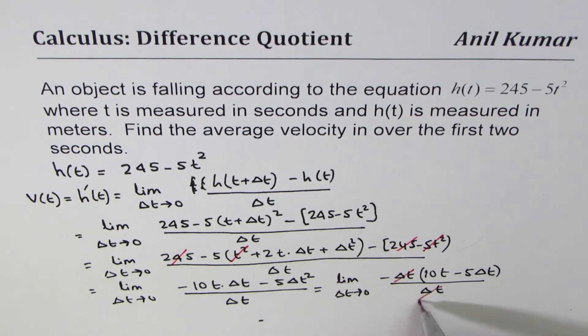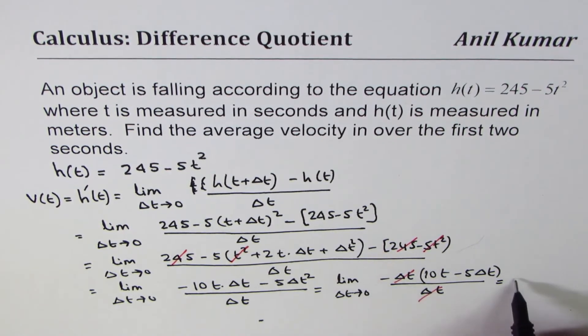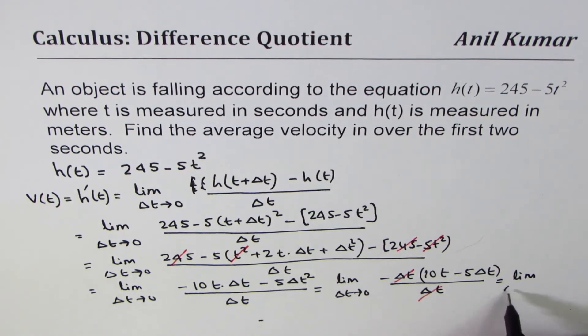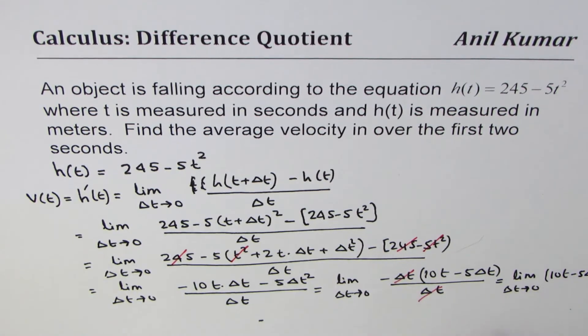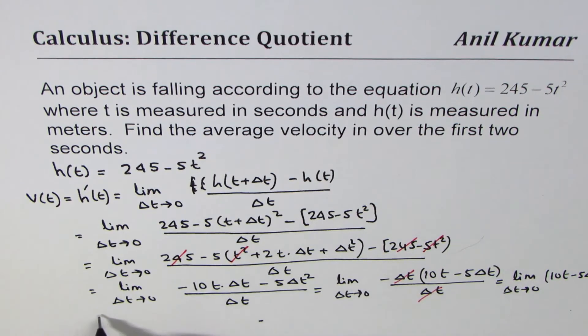Now, Δt and Δt can be cancelled. So in this expression, we get limit Δt approaches 0 for 10t - 5Δt. Now, since Δt is very small, we can replace it with 0, and this limit is 10t. So we get this limit equals 10t.